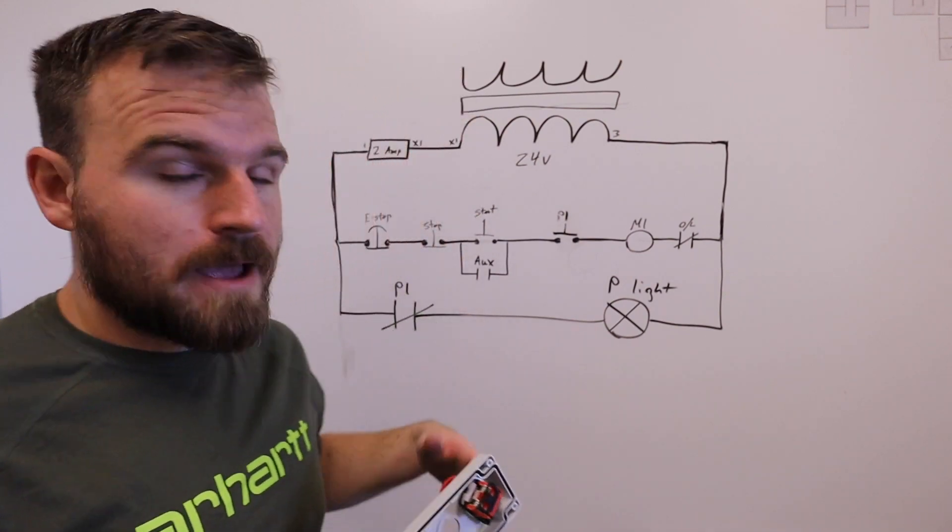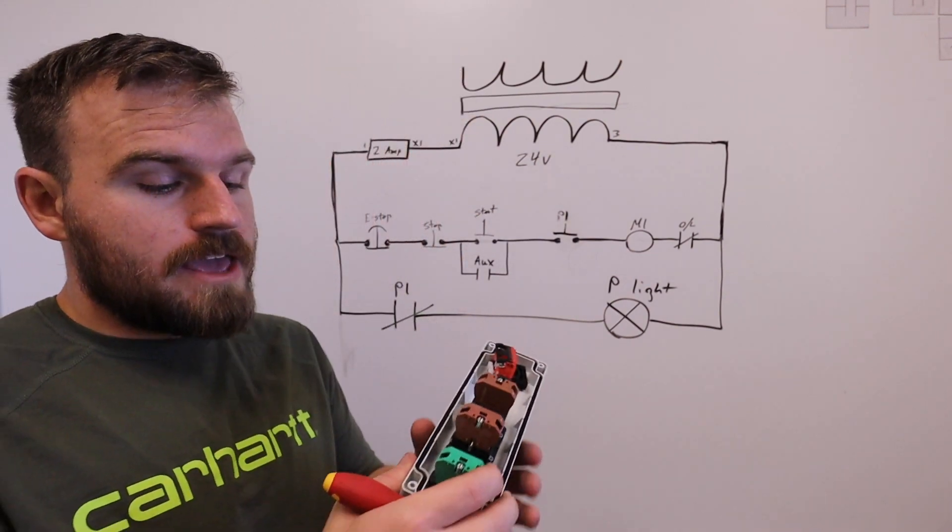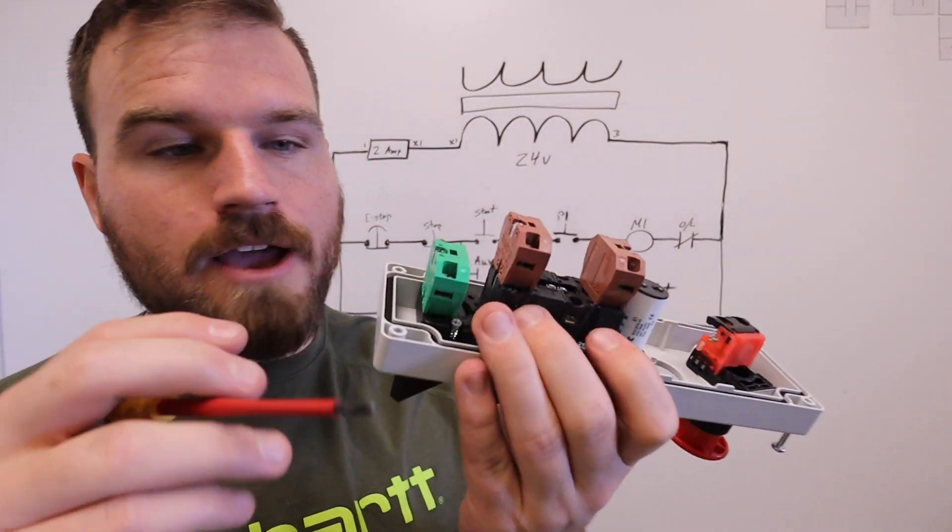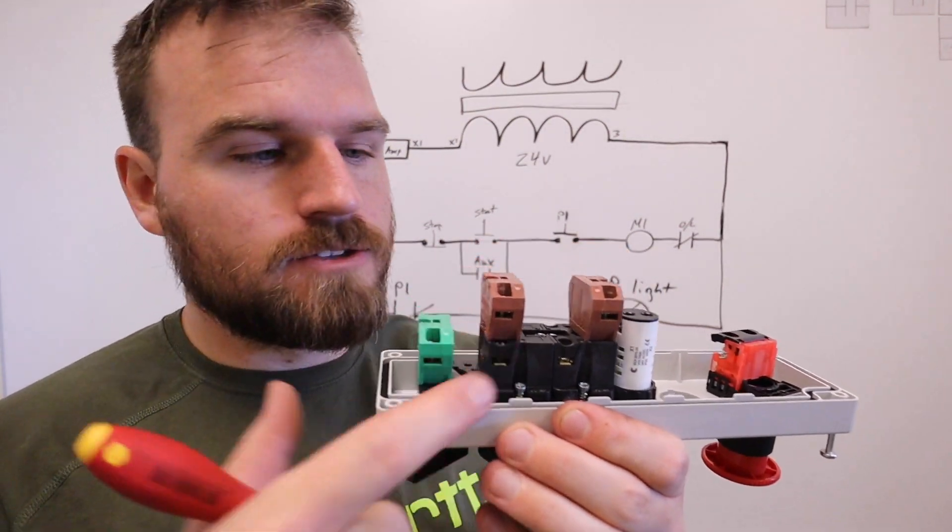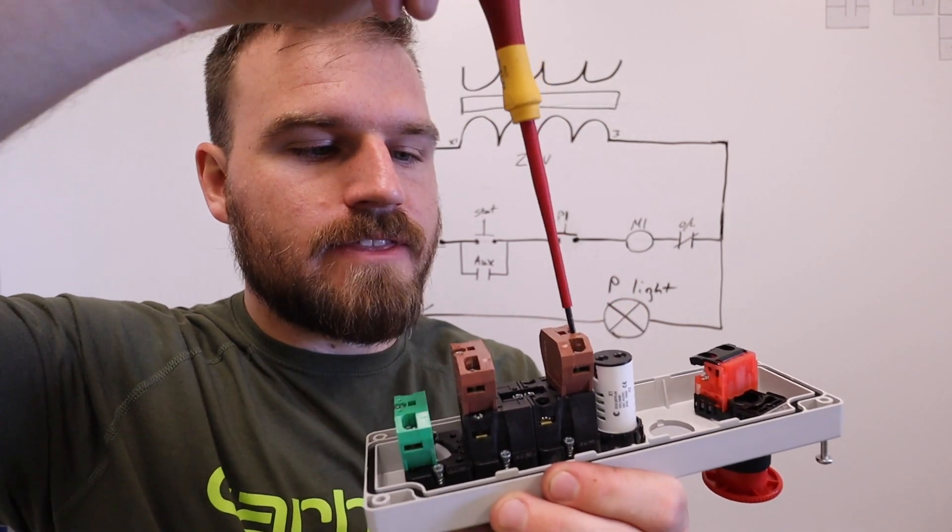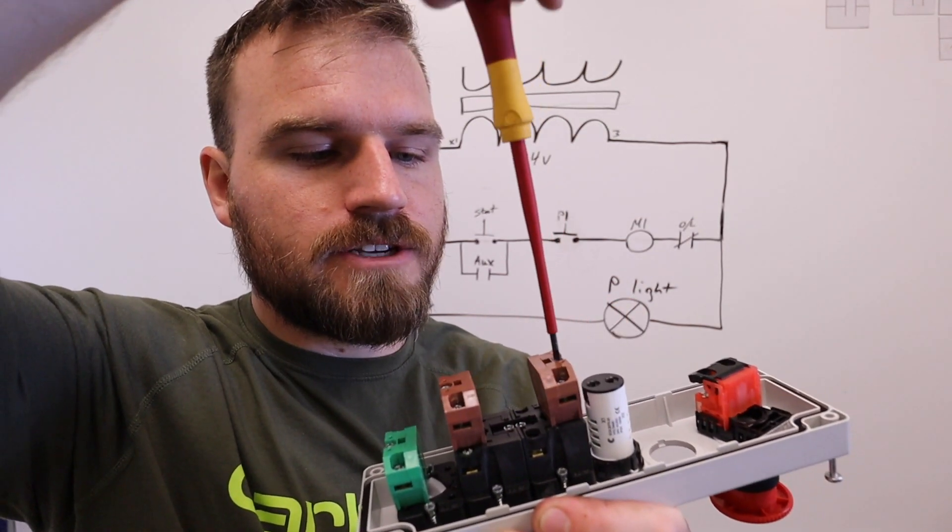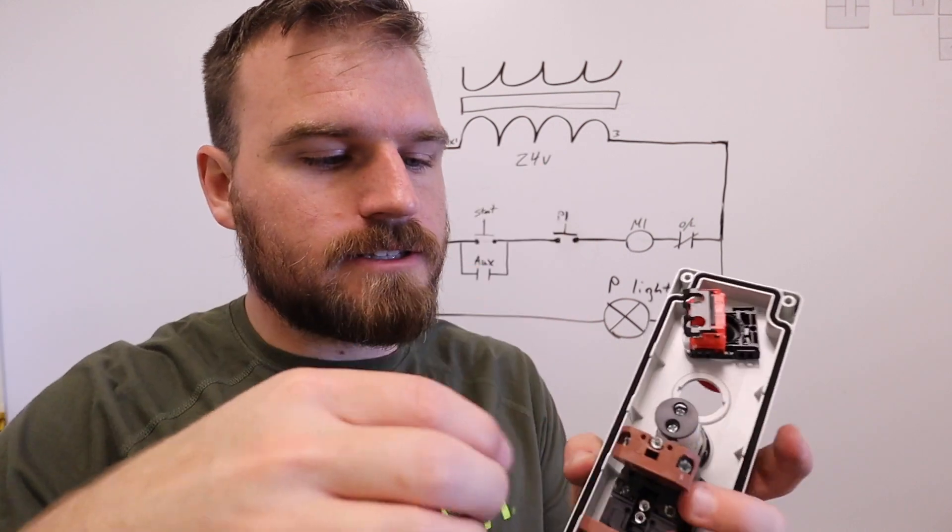But looking back at our schematic in comparison, if I look at this switch, I only have one terminal block or one switch mechanism. So what we're going to have to do is actually take this one off of the other switch and it just screws on and off.